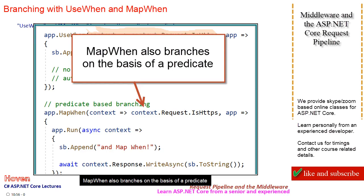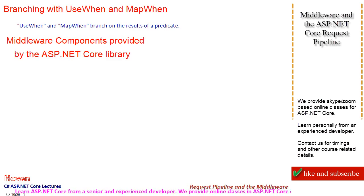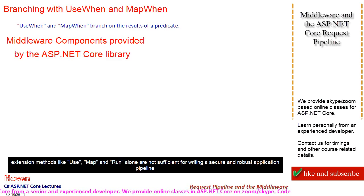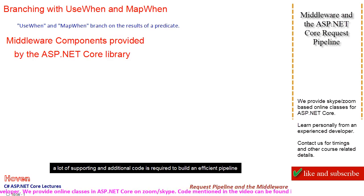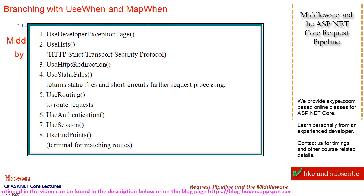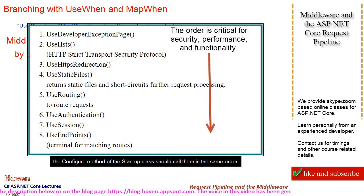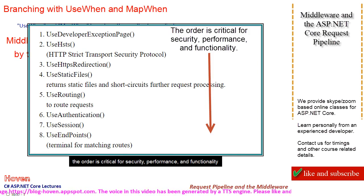The extension methods like Use, Map, and Run alone are not sufficient for writing a secure and robust application pipeline. A lot of supporting and additional code is required to build an efficient pipeline. To solve this problem, the ASP.NET Core library provides various pre-written middleware components. This is a list of some of the ready-made middleware components. The configure method of the startup class should call them in the same order — the order is critical for security, performance, and functionality.